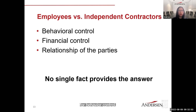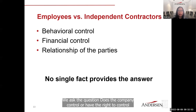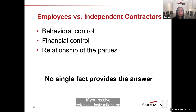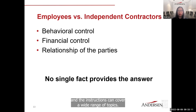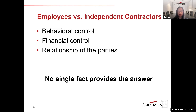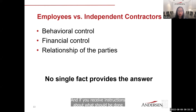For behavioral control, we ask: does the company control — or have the right to control — what the worker does and how they do the job? If you receive extensive instructions on how work is to be done, this suggests you are an employee. Instructions can cover how, when, and where to do the work, what tools or equipment to use, and where to purchase supplies. If you receive instructions about what should be done but not how, you may be an independent contractor.